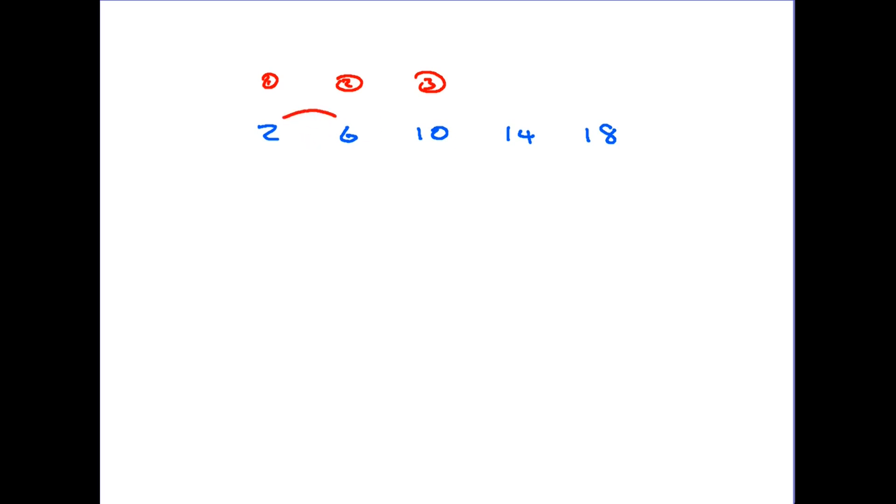The first thing we do again is we look at the gap between the numbers. In this case the space is 4, they're going up in 4s. So we start this particular sequence, this particular rule with 4n.